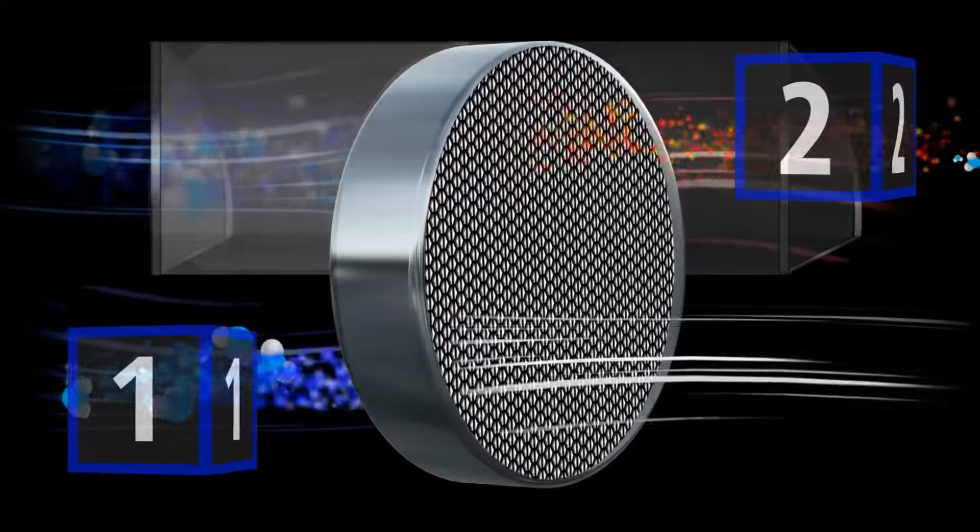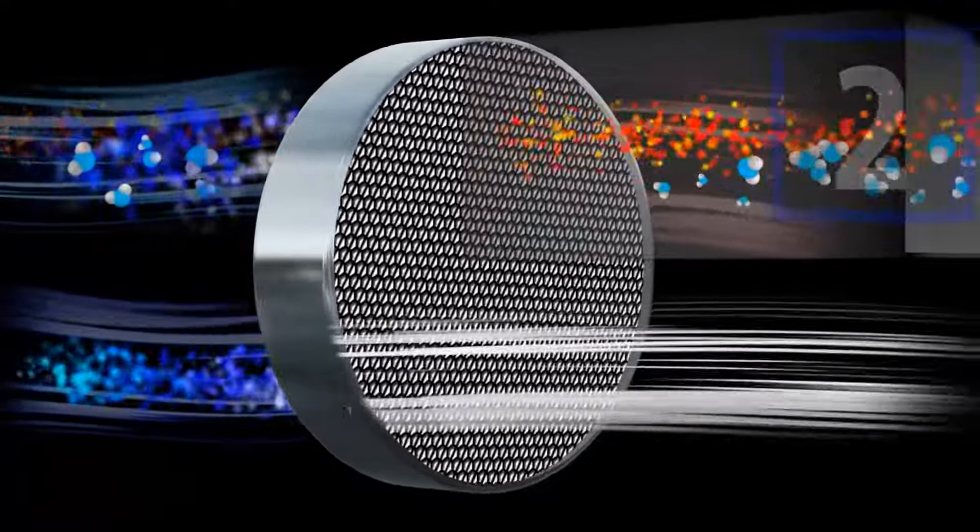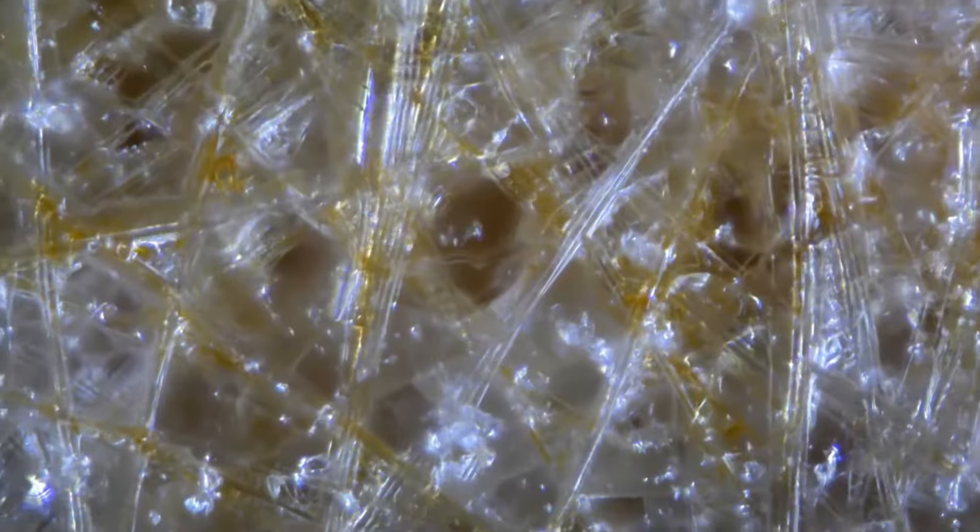This is called reactivation, or regeneration, of the desiccant. The heat we add to this airstream causes the bond between the moisture and the desiccant to be broken. The reactivation air, being heated, has a very low relative humidity, and therefore accepts that moisture that is being desorbed.